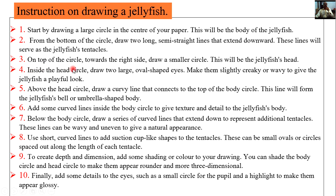Number three: on top of the circle towards the right side, draw a smaller circle — this will be the jellyfish head. Inside the head circle, draw two large oval-shaped eyes, making them slightly wavy to give the jellyfish a playful look. Above the head circle, draw a curvy line that connects to the top of the body circle — this line will form the jellyfish bell or umbrella-shaped body. Add some curved lines inside the body circle to give texture and detail. Below the body circle, draw a series of curved lines extending down to represent additional tentacles — these lines can be wavy and uneven to give a natural appearance.